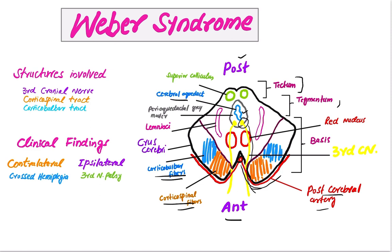This is the third cranial nerve. The structures involved in Weber syndrome are the crus cerebri and the third nerve. When stroke occurs due to occlusion of the perforating branches of the posterior cerebral artery, there is involvement of the third cranial nerve and the crus cerebri. The crus cerebri contains corticobulbar fibers and corticospinal fibers.